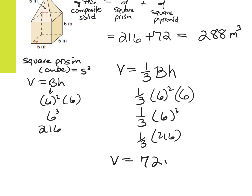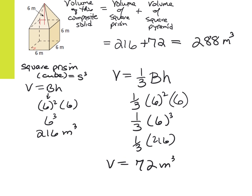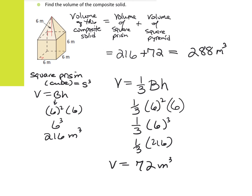The final volume of both solids together is 288 meters cubed. And that is it for the notes on section 11-6.